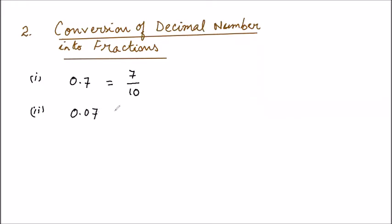0.07. Now in this question, we have two digits before decimal point, so we will write 100. 0.007 - it means we have three numbers before decimal point, so we will write 1000.